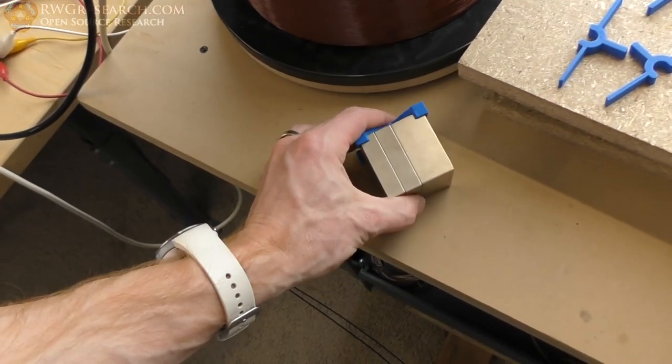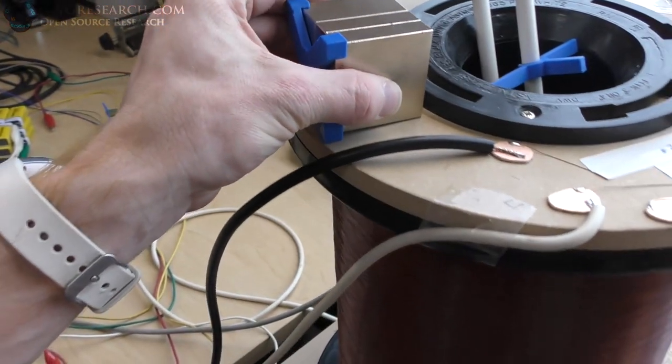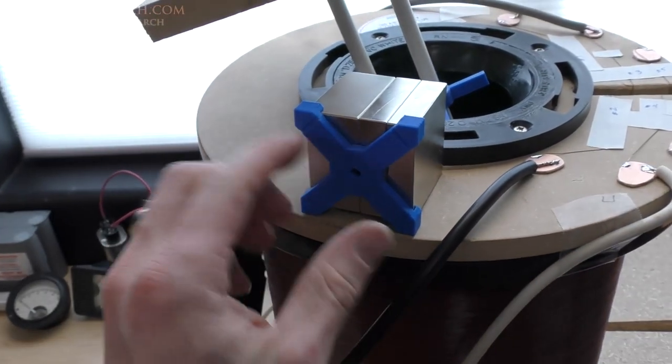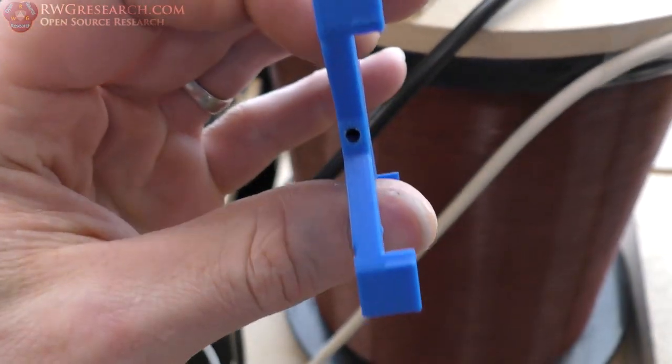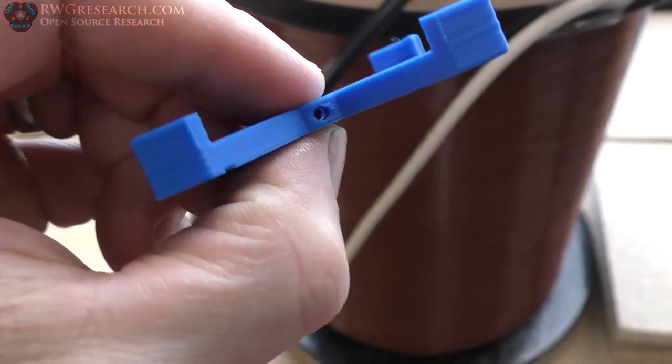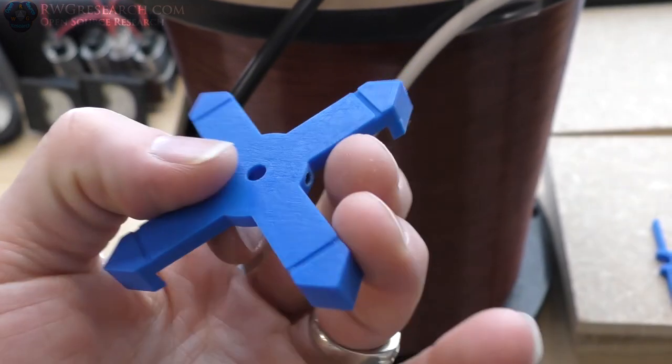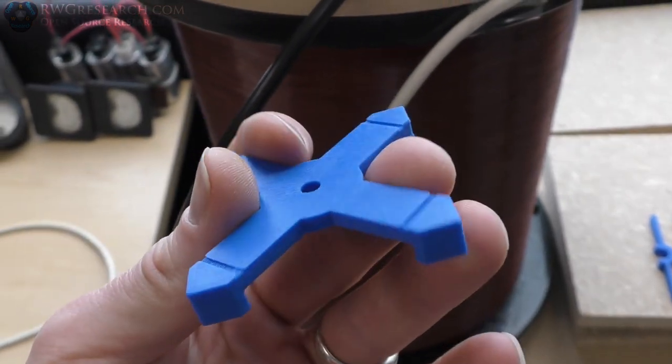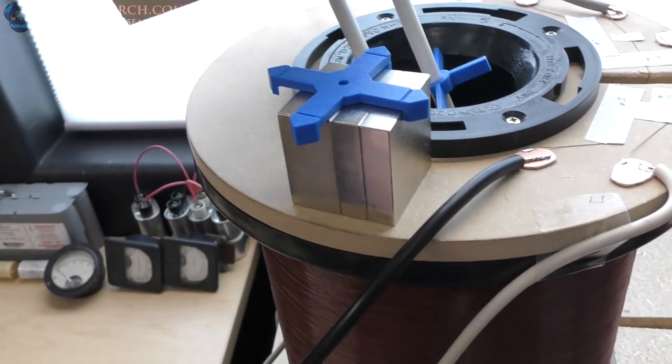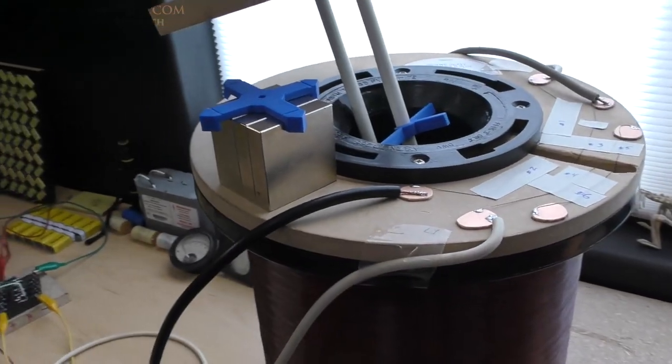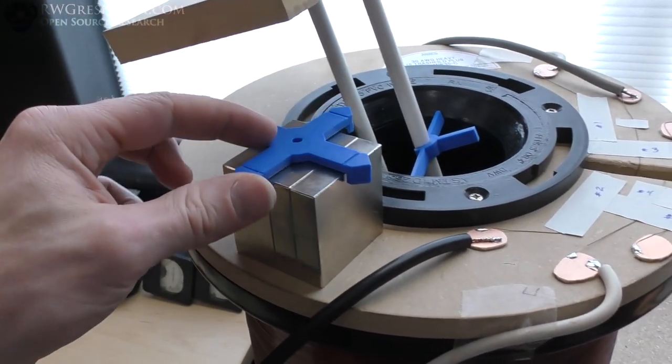I'm going to take fishing string instead of gluing this on here. I made slots in these. There's already a set screw in that one. I'm going to take fishing string, hook it on those edges and wrap it around this guy just to hold it in place. I don't think PLA sticks very well.